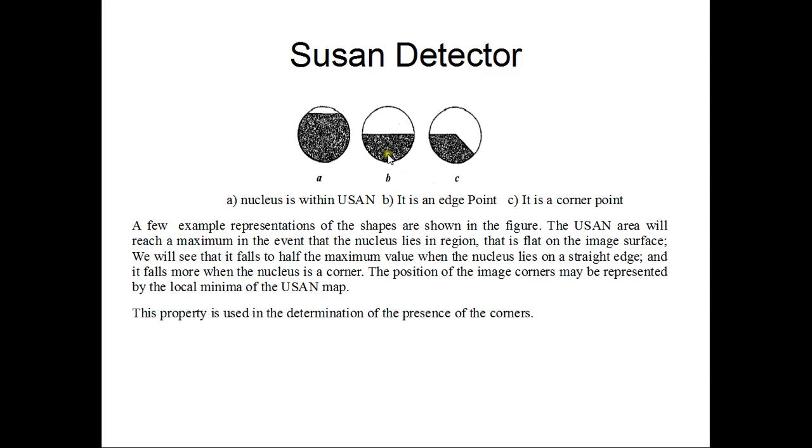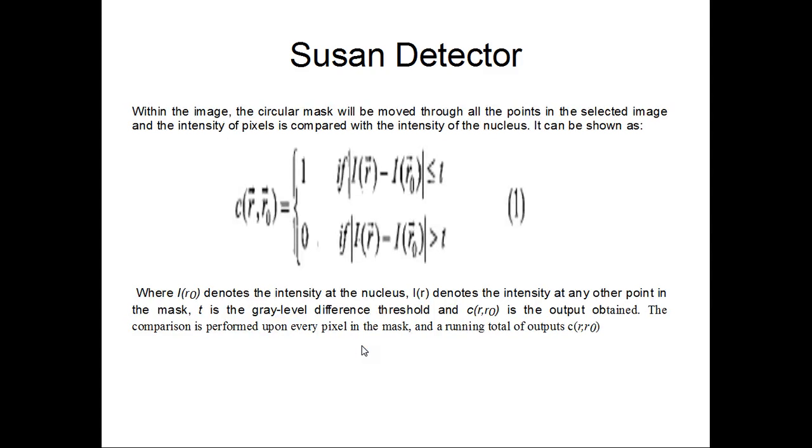Here we can see A, B, and C. This is where the nucleus is within USAN, this is where it is an edge point, this is where it is a corner point. Susan detector, let's learn more about that.